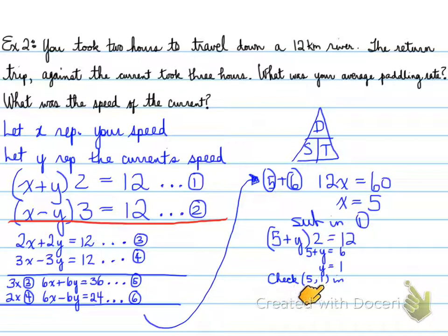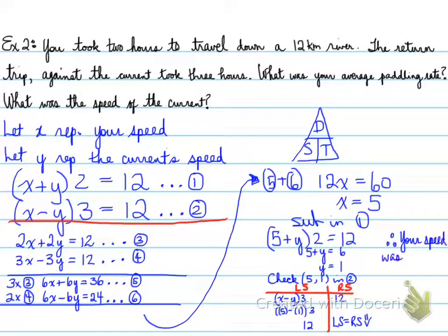We're checking the point 5, 1. Where are we checking it in equation number 2? And lo and behold, we plug it in and we get left side equals right side. So your speed turns out to be 5 kilometers per hour, and the current speed turns out to be 1 kilometer per hour.